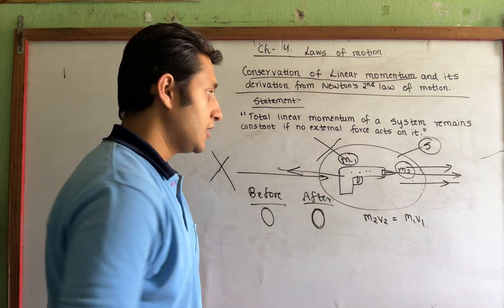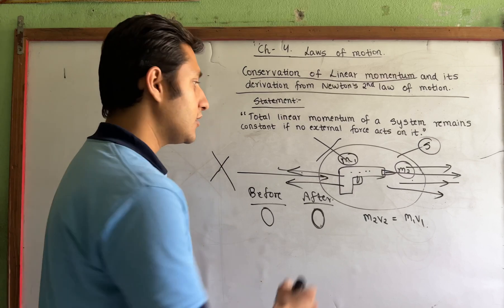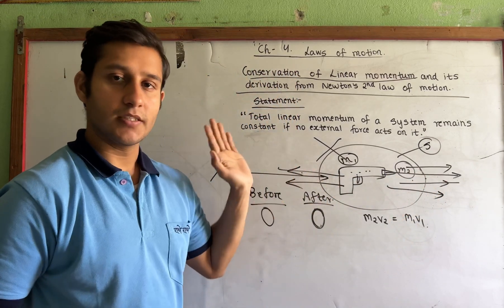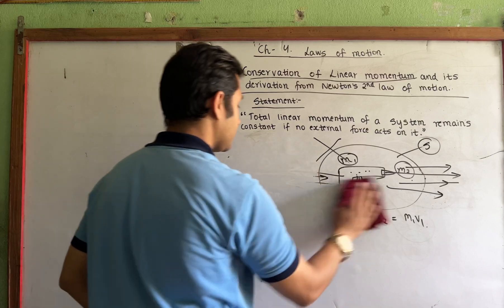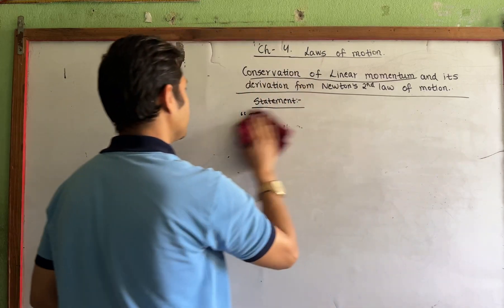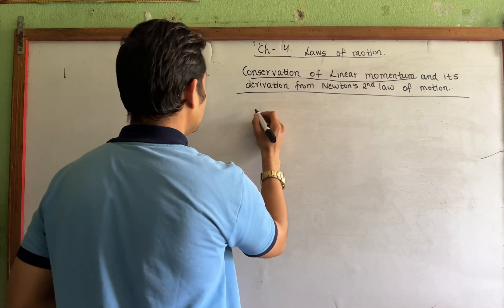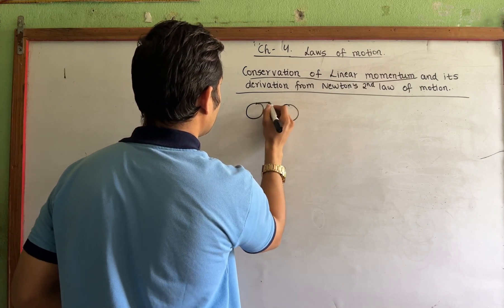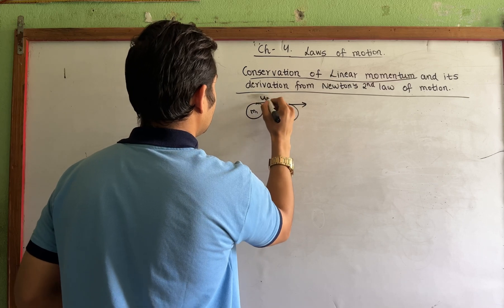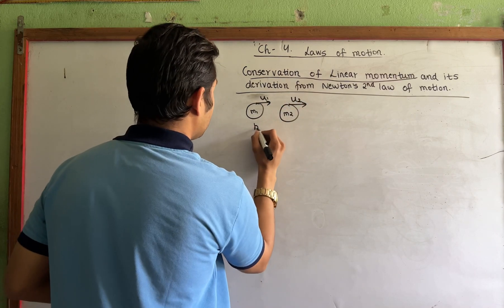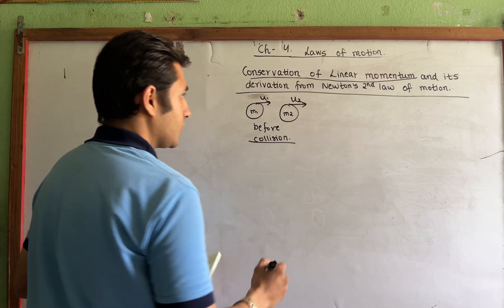The one we know is that the momentum of the bullet is equal to the momentum of the gun. So we will move on to the derivation. Derivation is very important for the exam. I want to give this, so I'll show you the figure.